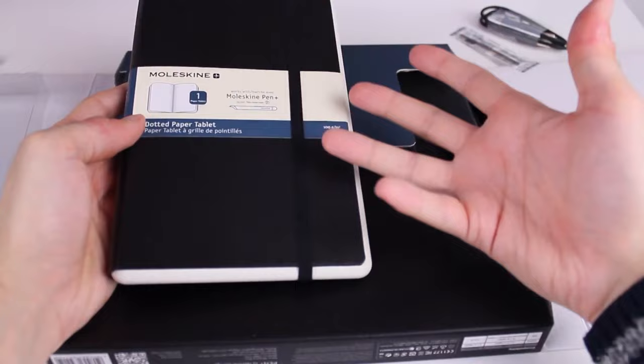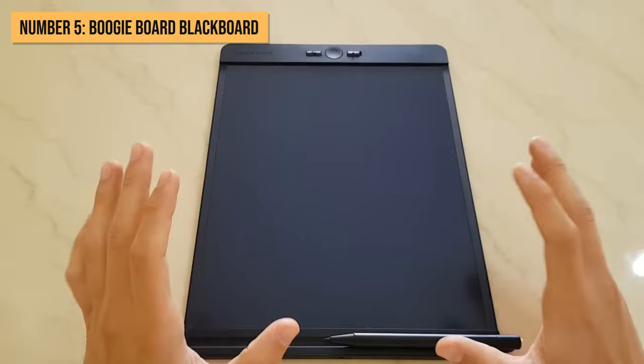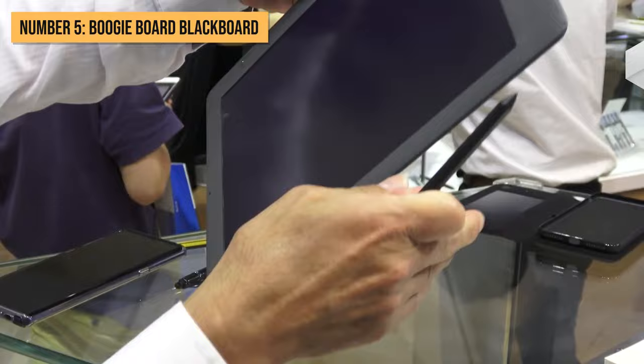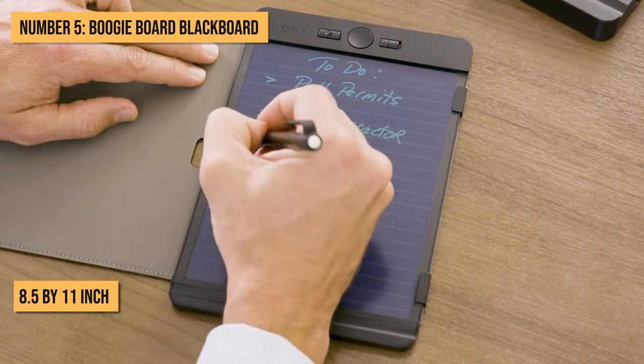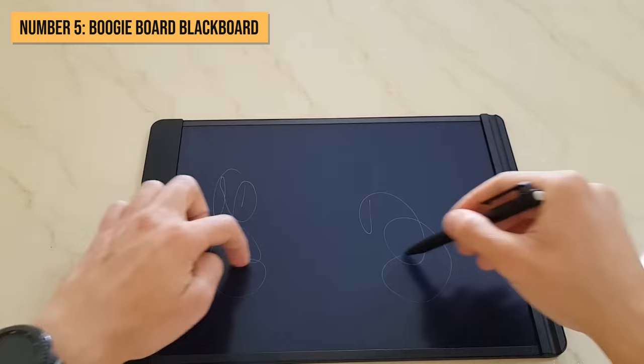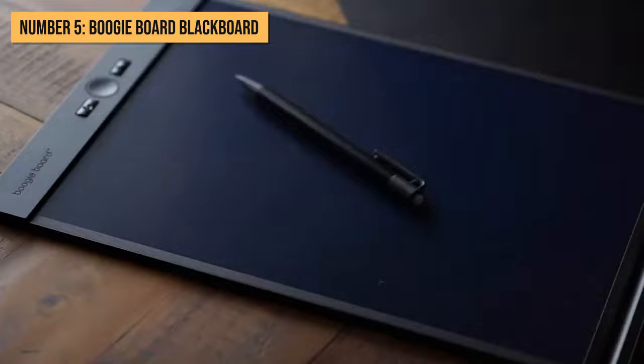Kicking off our list at number 5, we have the Boogieboard Blackboard. Now, don't let the name fool you, this isn't your average notebook. This bad boy means business. Sporting a sweet 8.5x11 inch writing surface, it's perfectly sized for all your note-taking and brainstorming needs. The Boogieboard rocks LCD eWriter tech, so no need for batteries or ink.